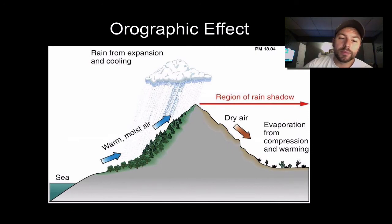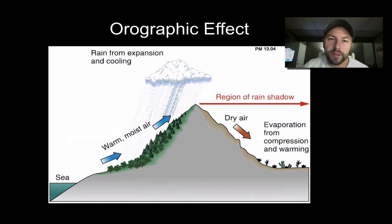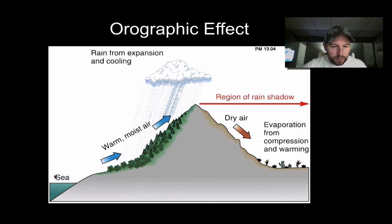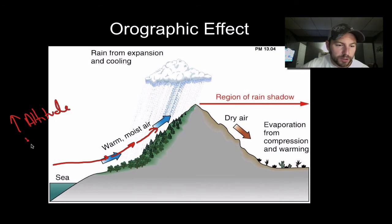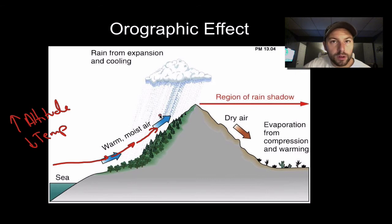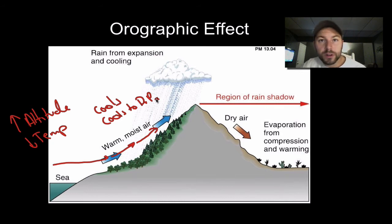Here's our diagram — definitely copy this down. It is probably one of the more important diagrams when we talk about the orographic effect or weather patterns in general. What we have is our warm moist air: it evaporates from the ocean and makes its way toward the mountains. As it moves, it hits the mountains and has no choice but to go over them. As we increase altitude or go up a mountain, temperatures decrease. If the temperature is decreasing, it's also going to get closer to dew point — so it cools, cools to dew point.